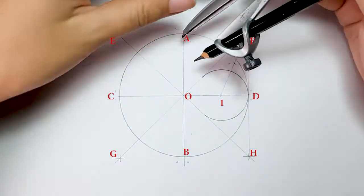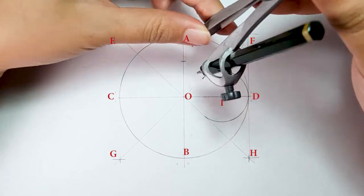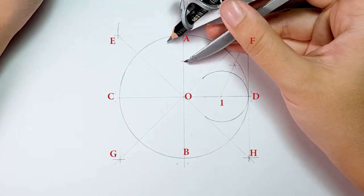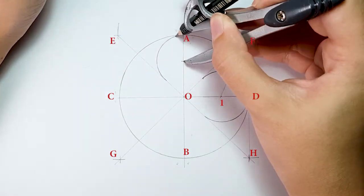With the same radius length, place your compass on point A and draw a mark on line OA. Then, place your compass on the marked point to draw a circle on major arc.